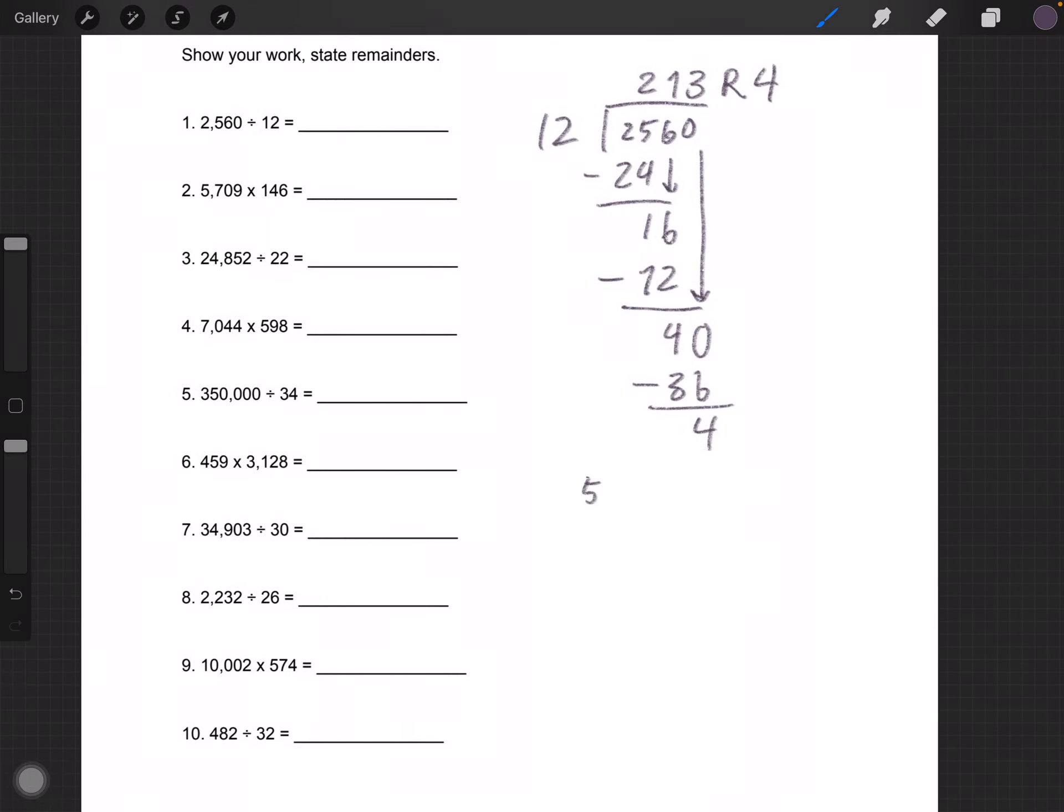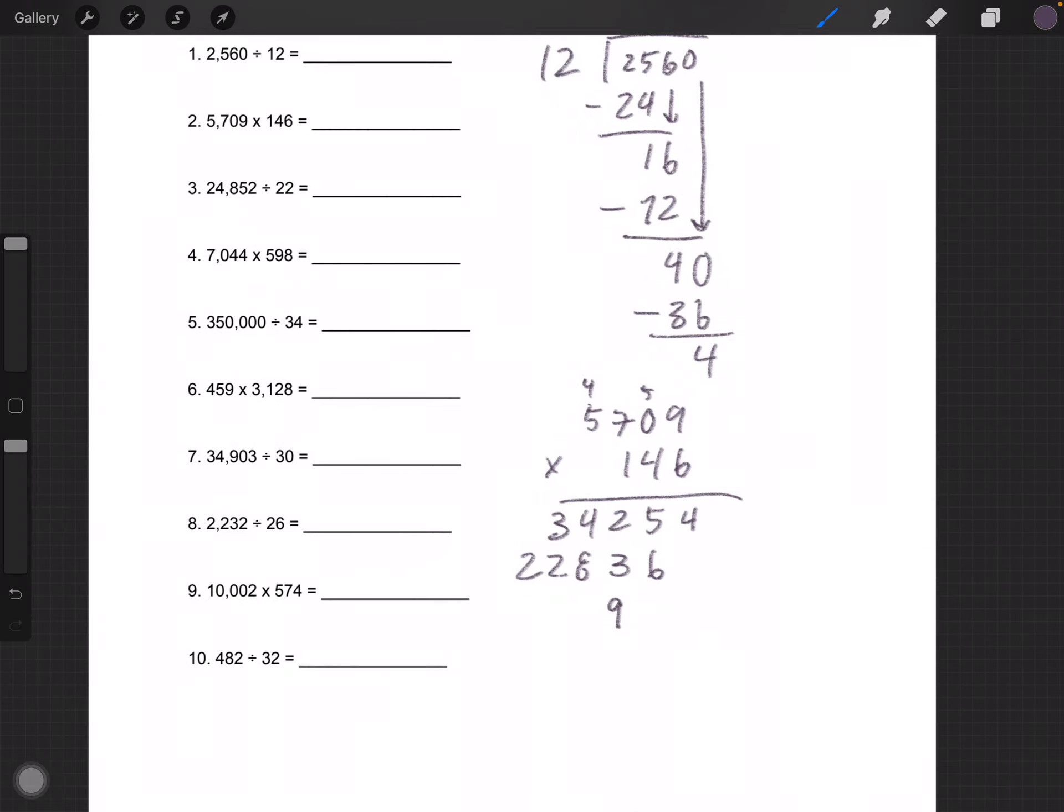Number 2 is 5,709 multiplied by 146. 9 times 6 is 54. 6 times 7 is 42, and that becomes 34. 4 times 9 is 36. This becomes 22. And since it's multiplied by 1, it's simply the same thing.